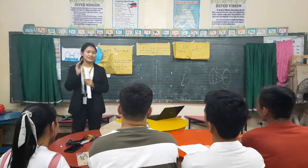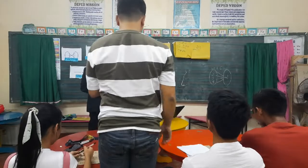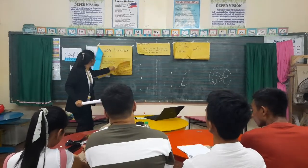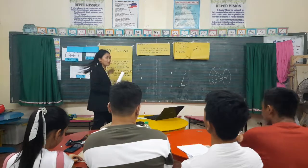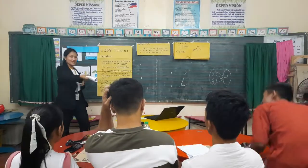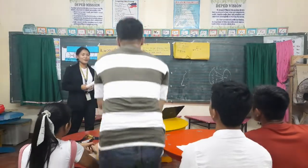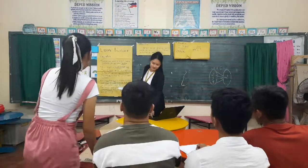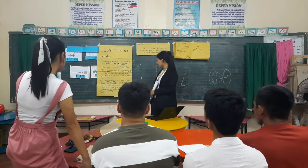So who among you here have an idea of what is a linear function? Mr. Kababa: A linear function is a polynomial function of the first degree. Okay, that is correct. So here is the definition of linear function. A linear function is a polynomial function of the first degree. Its graph is a straight line. The domain of a linear function is the set of real numbers. Its range is also the set of real numbers.